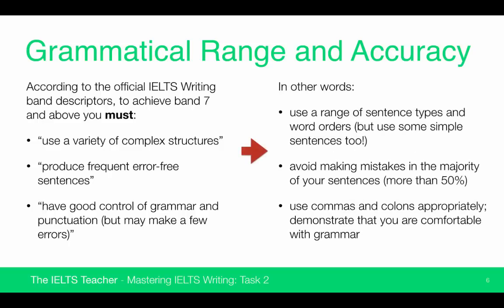In other words, you must use a range of sentence types and word orders — try to mix up your sentence structures and don't be repetitive using the same structures all the time. However, do try to use some simple sentences too, as this helps to create a sense of rhythm in the essay: a long sentence, then a shorter sentence, then a long sentence and a shorter sentence. Aim to write error-free sentences approximately 50% of the time — more than 50% will hopefully score you a band 8.